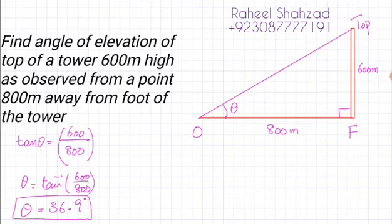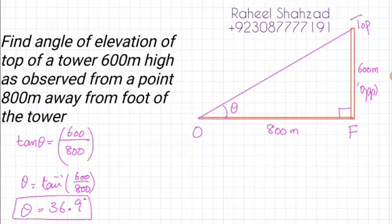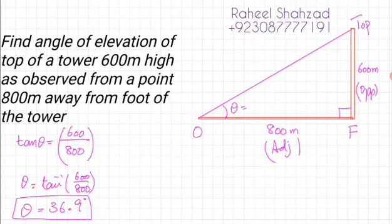So theta is going to be 36.9 degrees. This is the angle of elevation — the top of the tower is 600 meters high and you are observing it from 800 meters away. We apply basic trigonometric ratios because it's opposite over adjacent, and we know that gives us tan. So tan θ = 600/800, and taking tan inverse gives θ = 36.9°, which is the angle of elevation.